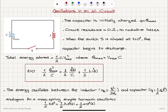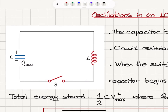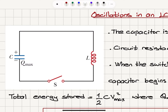Oscillations in an LC circuit. Let's consider a capacitor that was initially charged to a total charge of Q max. Here is the positive electrode, here is the negative electrode, and it is to be connected to an inductor at time t equals zero when the switch is closed.